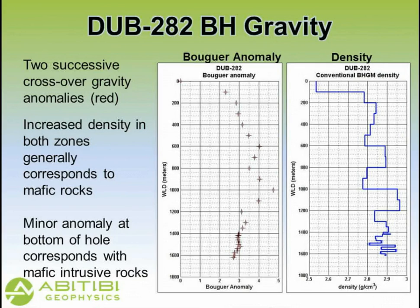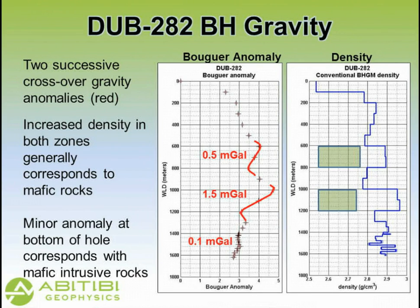This is a typical product that we deliver — this is hole 282. There are two crossover anomalies. They are both coincident with mafic rocks, and although they're mafic rocks, they are of different density. The gravity is certainly responding to density changes in lithology along the way. At the bottom, there appear to be some mafic intrusives, but that's the type of thing you need to look at carefully to determine the level of interest.